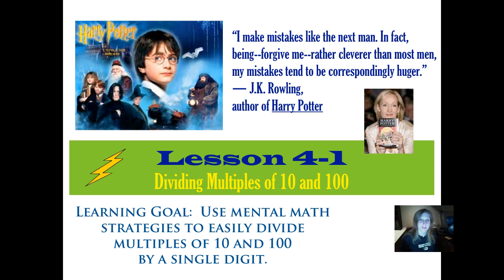I'm Mrs. Gooding, and our quote today is by J.K. Rowling, who wrote Harry Potter. She said, "I make mistakes like the next man. In fact, being — forgive me — rather cleverer than most men, my mistakes tend to be correspondingly huger." So I think she's just saying that the more complex and complicated things we deal with in our life, or in our math class, the more likely we are going to make some big mistakes, and that's okay. It's okay to take those risks.